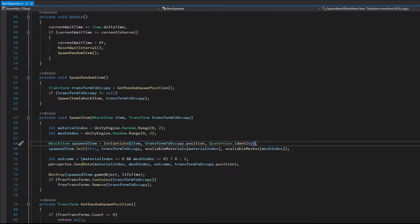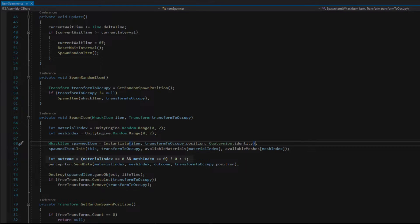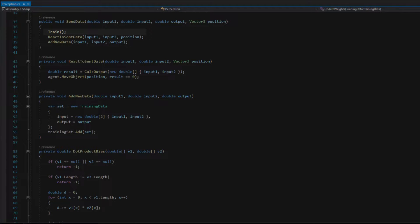Objects are spawned by script called ItemSpawner, which selects randomly a material and a mesh. Next, I created a simple system that spawns items and sets training data to the Perceptron. Only when index of material is 0 and mesh is 0, I send outcome equal to 0. Then the Perceptron does one epoch of training.